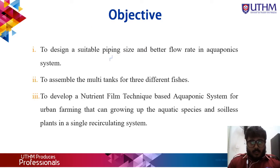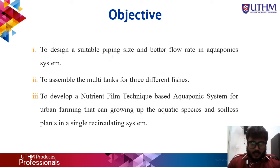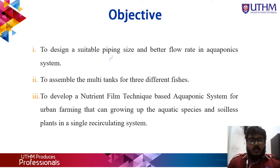Here are the objectives for my project. First, to design a suitable piping size and better flow rate in the aquaponics system. Second, to assemble multi-tanks for three different fish species. Third, to develop a nutrient film technique based aquaponics system for urban farming that can grow aquatic species and soilless plants in a single recirculating system.